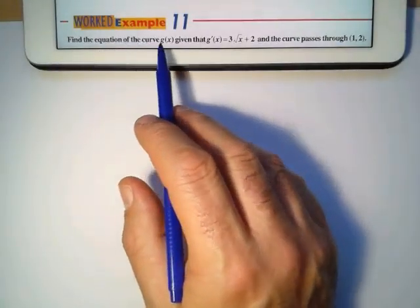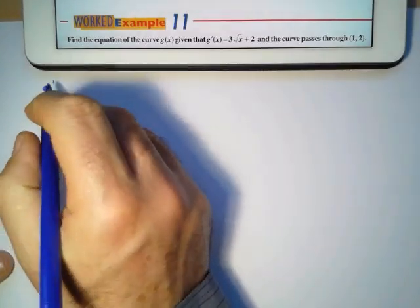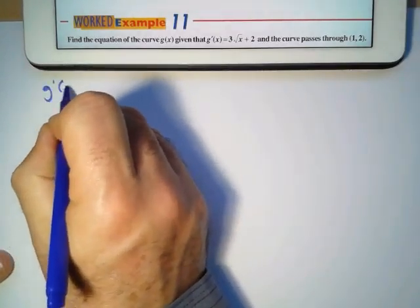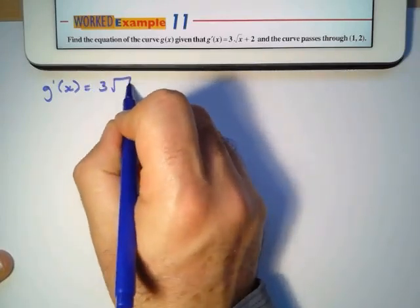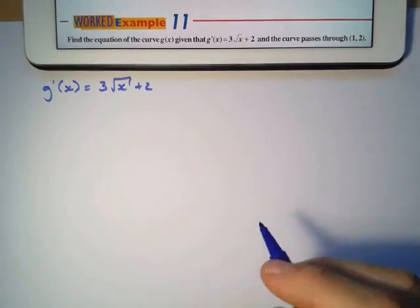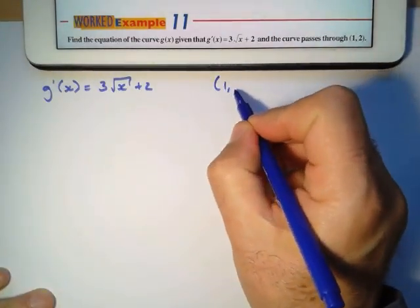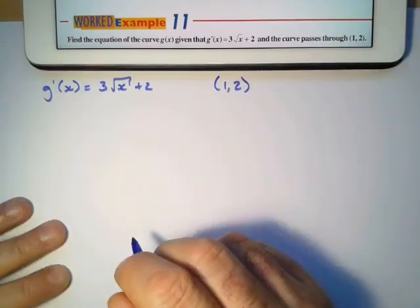Find the equation of the curve g(x) given that the derivative of g(x) equals 3 square root of x plus 2 and the curve passes through the point (1, 2), which means that 1 and 2 is somewhere on our graph.